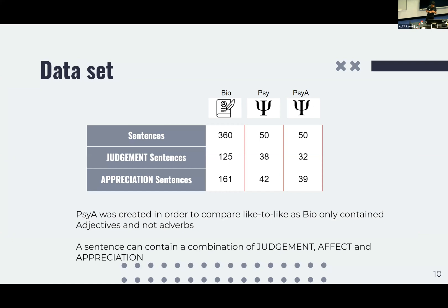We took two datasets. This is a common problem in appraisal — linguists generally don't release their datasets, so I had to beg people to send me data. Thankfully there are two publicly available datasets. One is 'bio,' containing biographies of people with short sentences. The other is 'psych,' a psychological evaluation between a psychiatrist and a patient. We created a subset called 'psych A' because bio only contains adjectives and not adverbs. For a like-to-like comparison, we created psych A to test with automated approaches.